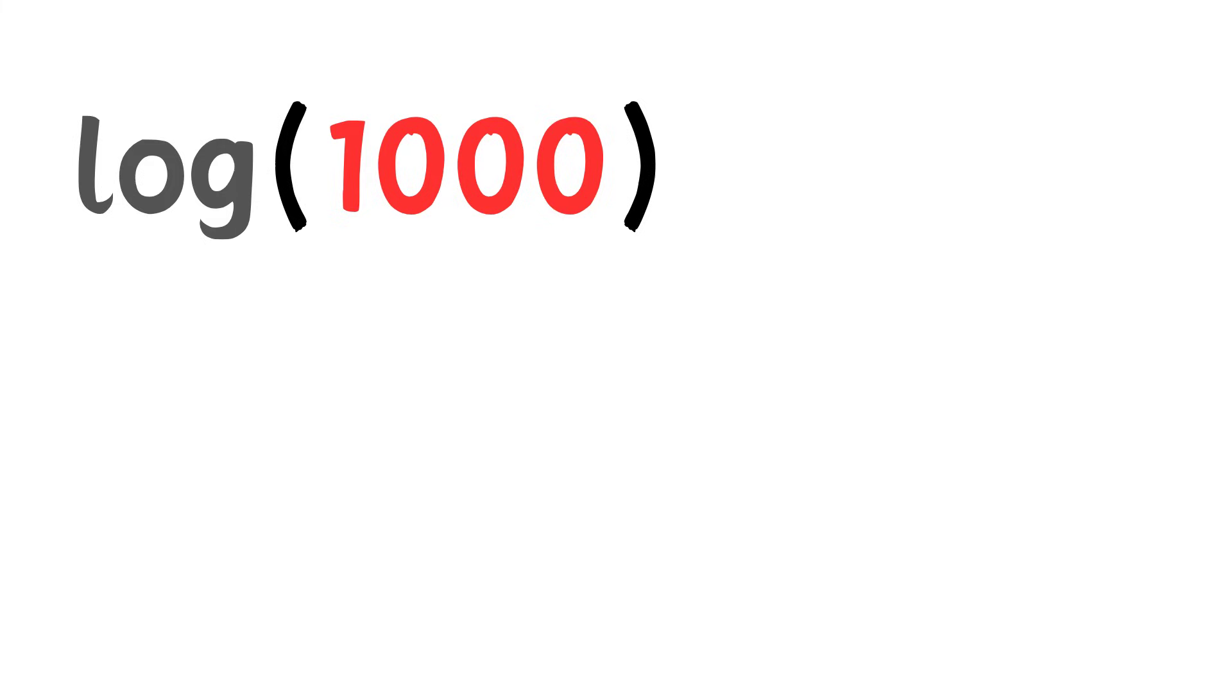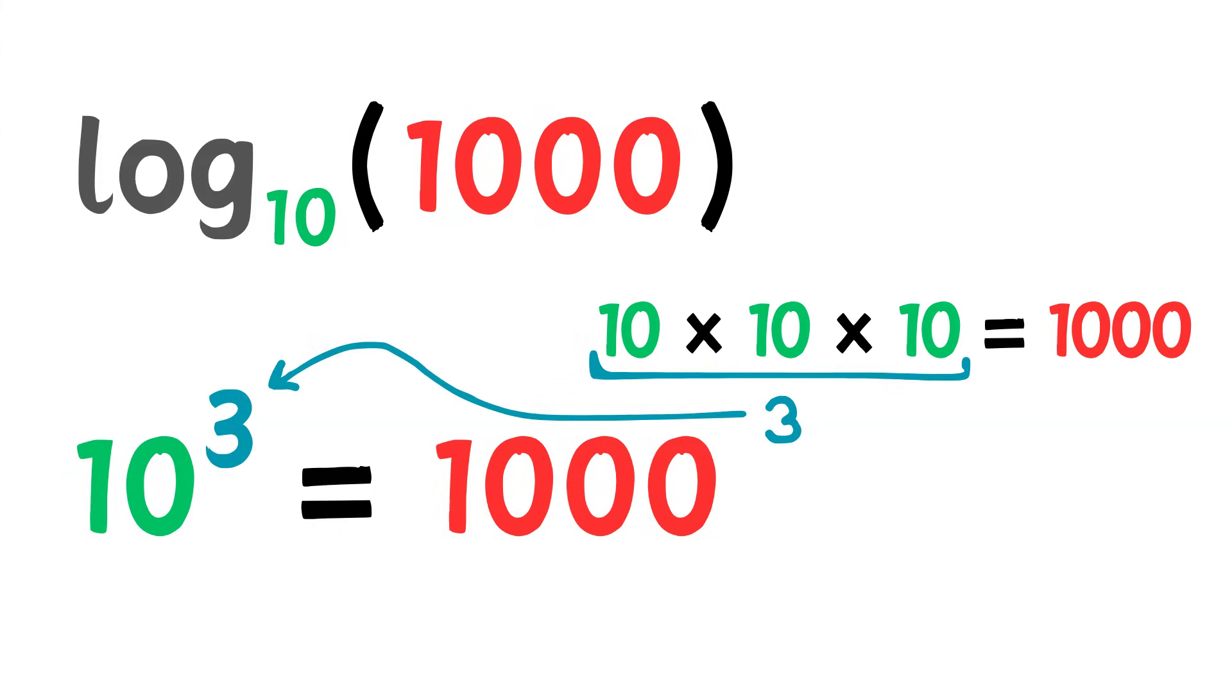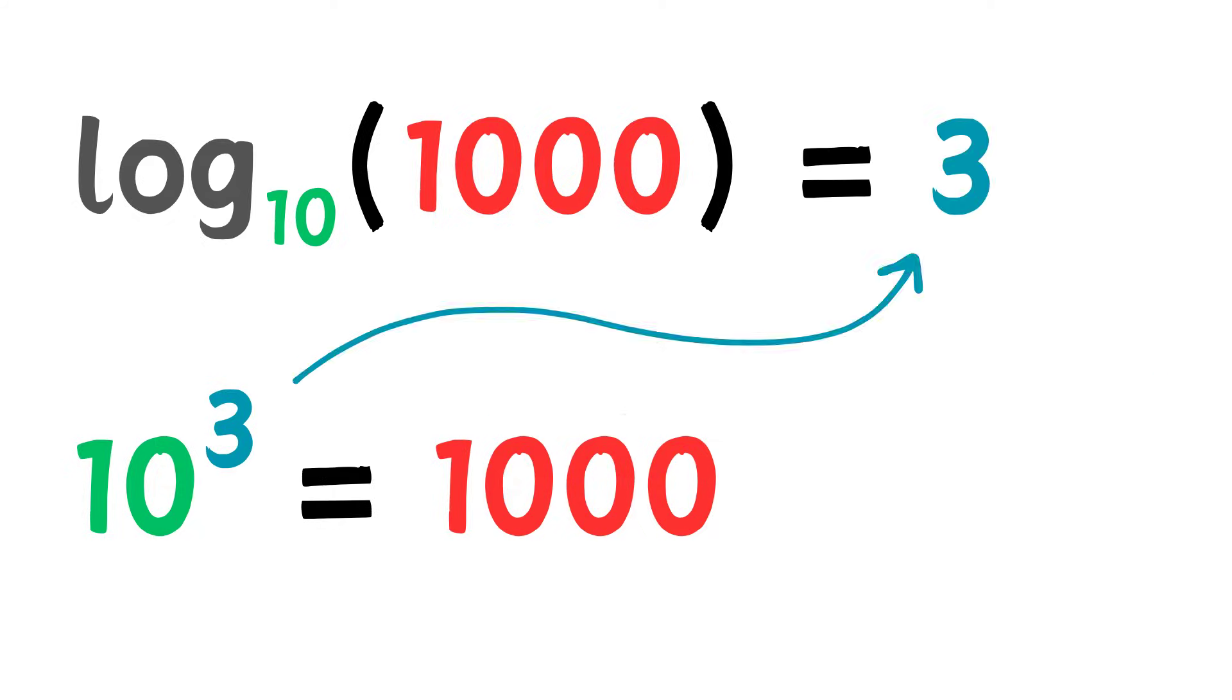If we just saw log of 1000, we know that this is a logarithm with a base of 10. What exponent should we raise 10 to to make 1000? Well, 10 raised to the third power is 1000. So the answer to this logarithm is 3.